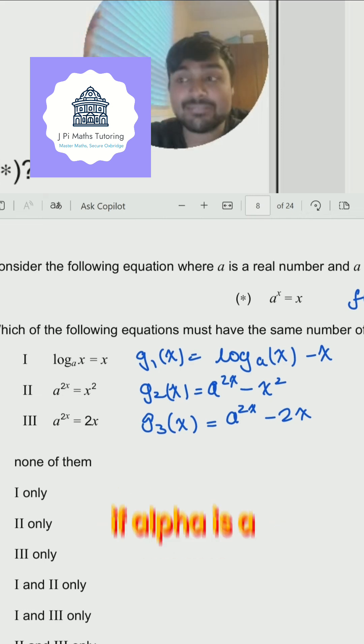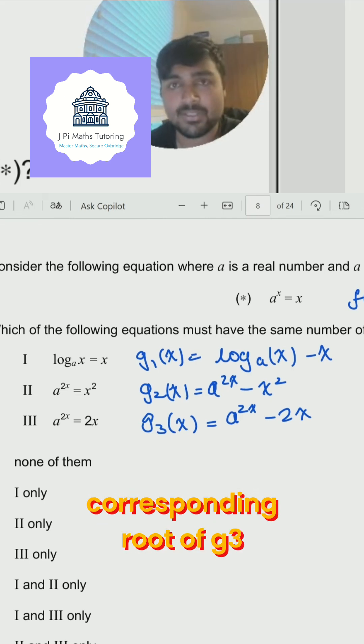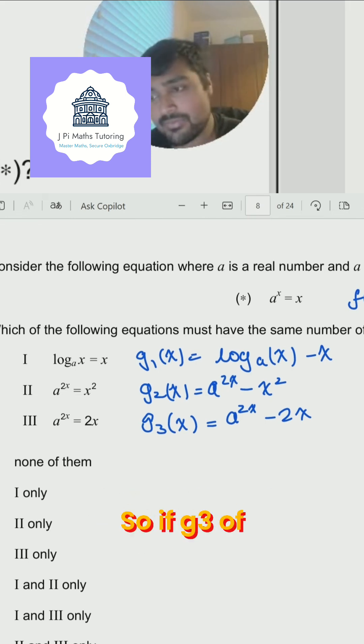So this basically means if alpha is a root of f, then it's also or then there's a corresponding root of g3. But the reverse is also true. So if g3 of, let's say, t is 0, then f of 2t is 0.